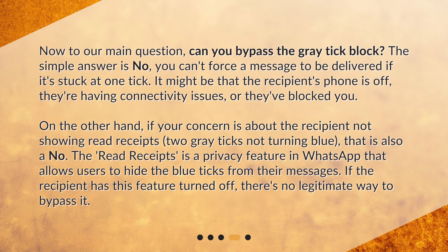On the other hand, if your concern is about the recipient not showing read receipts — two gray ticks not turning blue — that is also a no. The read receipts feature is a privacy feature in WhatsApp that allows users to hide the blue ticks from their messages. If the recipient has this feature turned off, there's no legitimate way to bypass it.